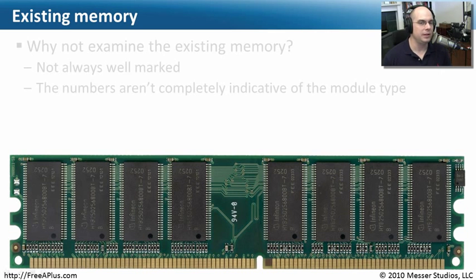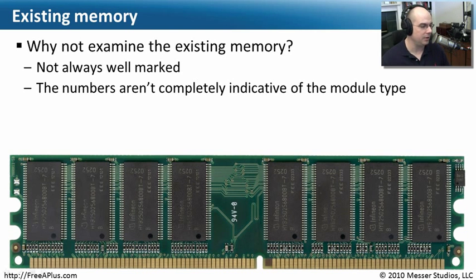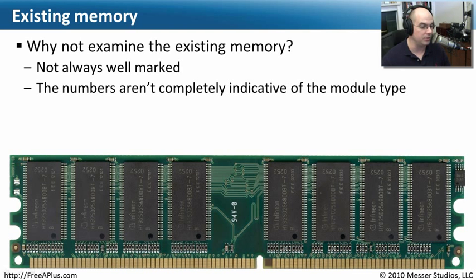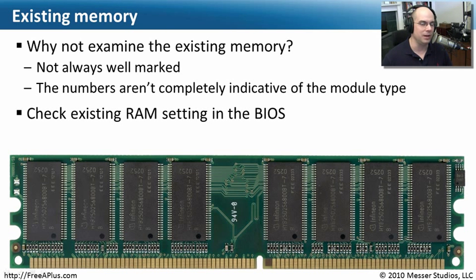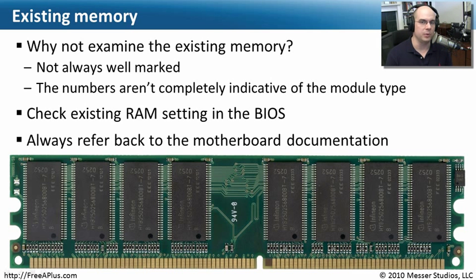You might think: why not just open the back and look at the memory already inside? The problem is the numbers on an individual chip may be specific to that chip and not the memory module itself — they won't tell you the real speed, type, or latency. You can look at the existing RAM settings in the BIOS to see how much memory is installed; if it says 2 GB across two modules, you can assume they're 1 GB each. But you should always, always go back to your motherboard documentation — don't just look at the memory inside and assume you have it right.